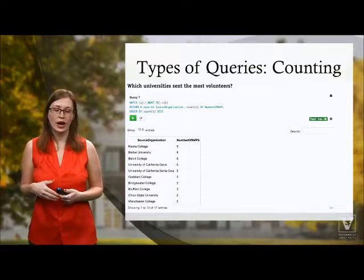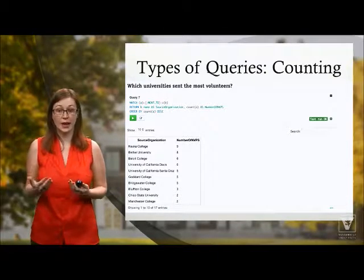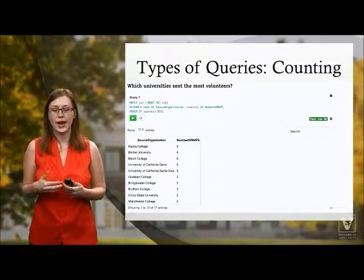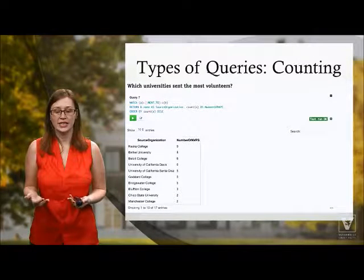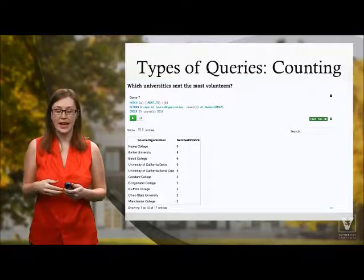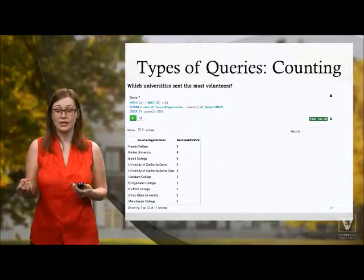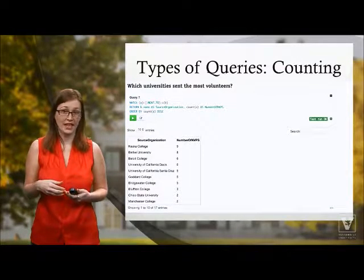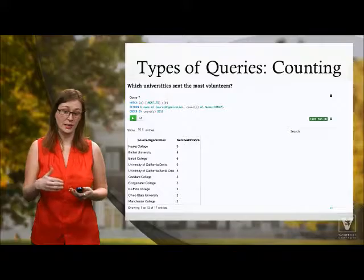This final type of query is a simple count displayed as a table. It asks which universities had the most volunteers sent, and it simply counts the number of relationships that each university has and arranges them in a table.